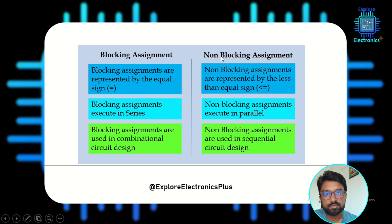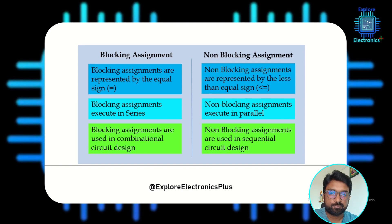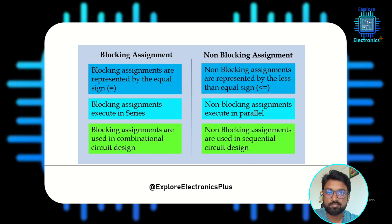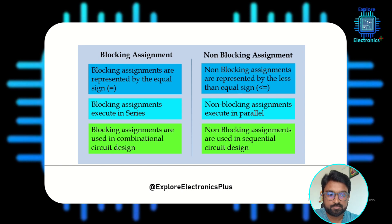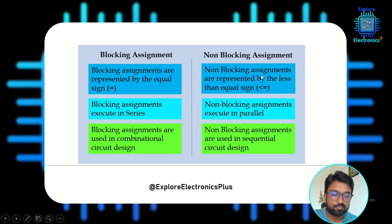In non-blocking assignment, taking the same three-statement example, all three statements execute at the same time. So a + b, a - b, and a * b are all calculated first, and then the results are assigned to y, x, and p respectively. Non-blocking assignments do not block the execution of the next statement — all statements execute in parallel.